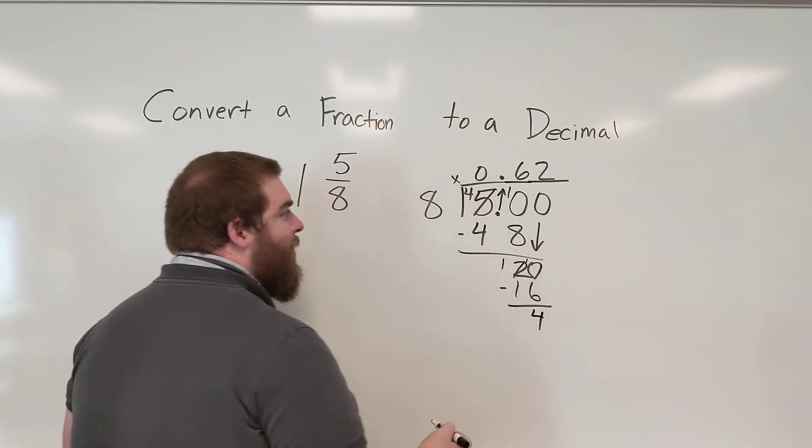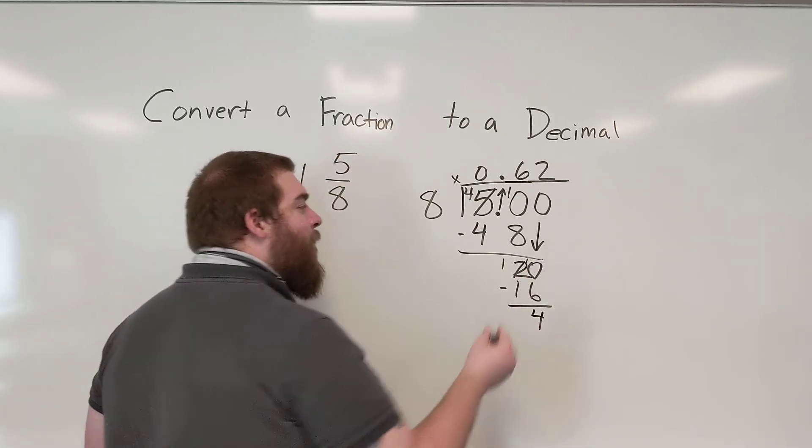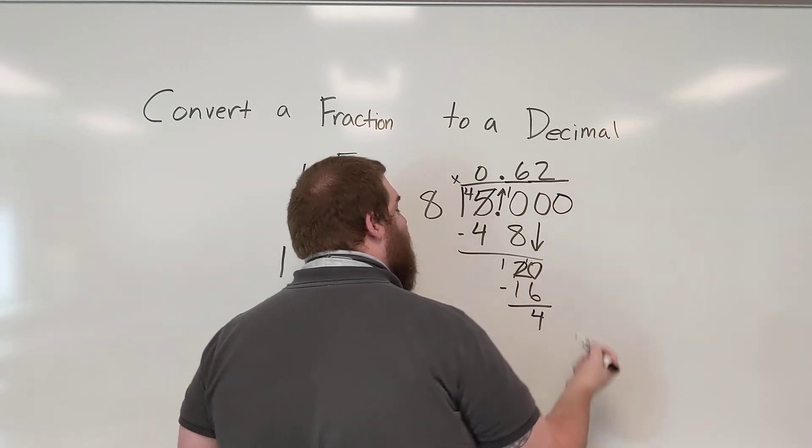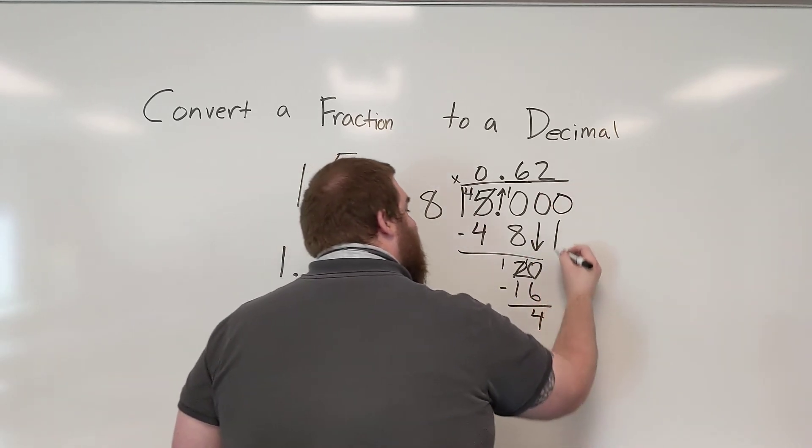1 minus 1 is 0. I still have a remainder so I need to continue adding on zeros to the end of our decimal numbers, and bring that down.